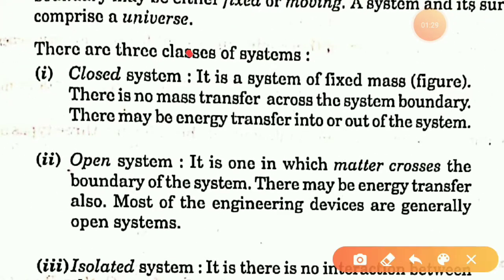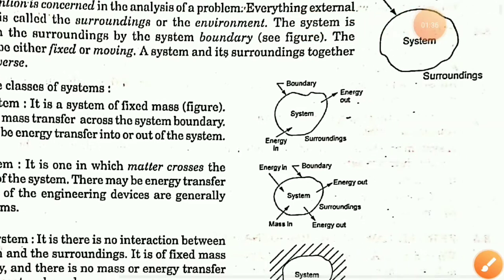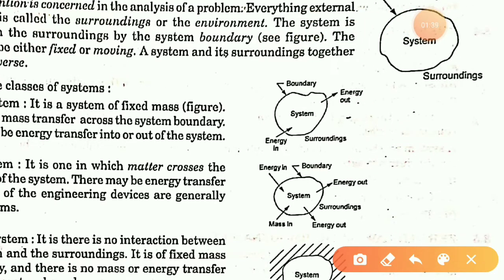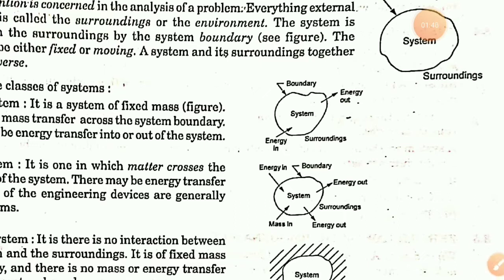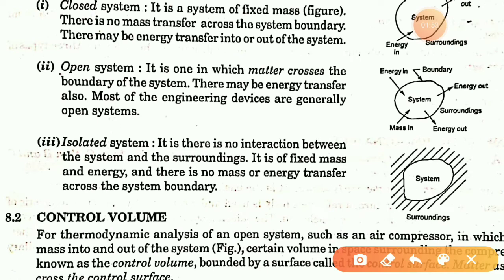There are three types of systems: the closed system, the open system, and the isolated system. In a closed system, you take a fixed mass — the mass is fixed and you can transfer energy. In an open system, mass transfer occurs; the mass is transferred across the boundary.